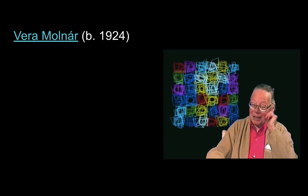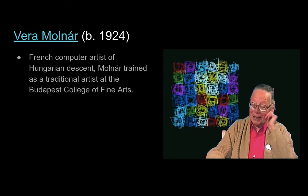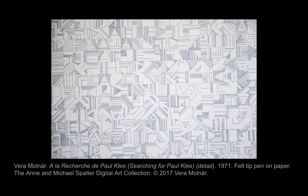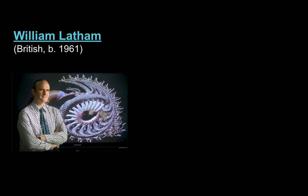Now we are going to look at yet another example of computer-based work — the French computer artist of Hungarian descent Vera Molnar. Molnar trained as a traditional artist at the Budapest College of Fine Arts and began working with computers in 1968 to create algorithmic paintings based on simple geometric shapes with geometrical themes. Many of Molnar's titles also allude to more traditional artists, such as Paul Klee.